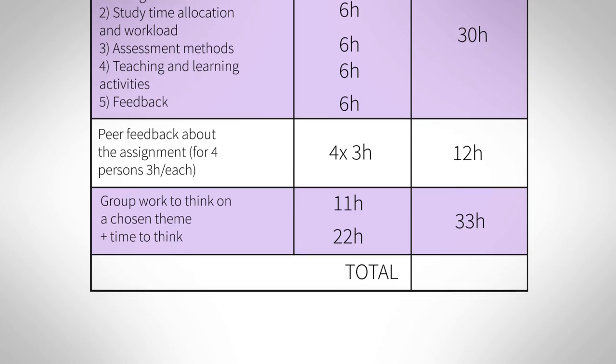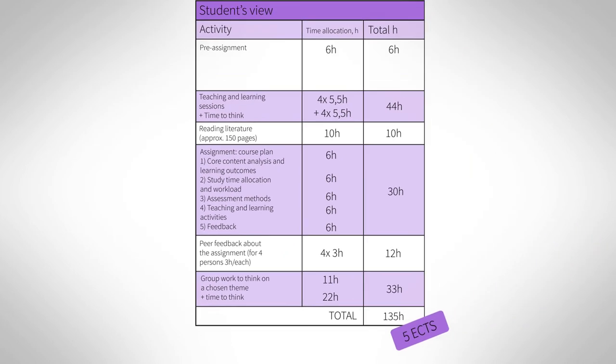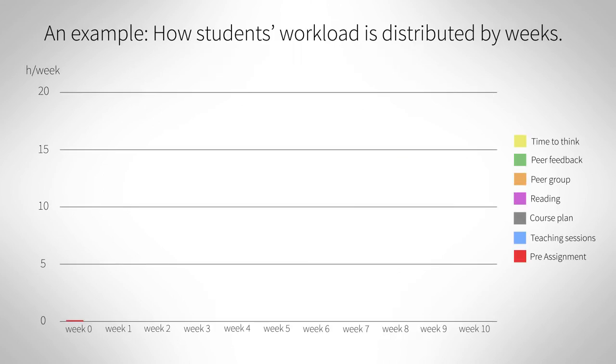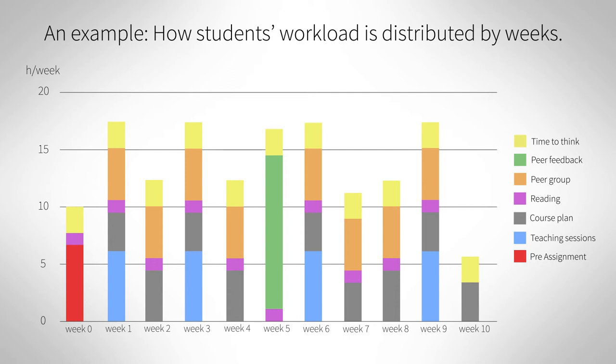When all the learning activities are summed up, it totals 135 hours, which equals five ECTS credits. You can easily visualize the student workload and study time allocation for the students by, for example, using an Excel chart. Visualization may help your students to picture how much time they actually need to allocate to the course on a weekly basis.